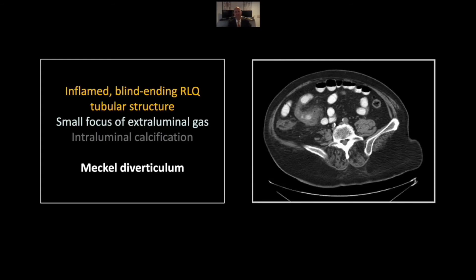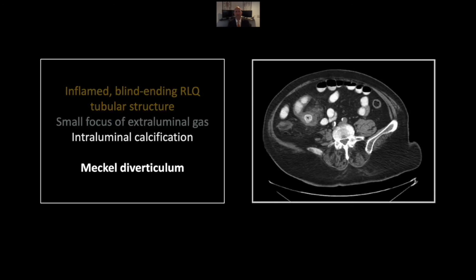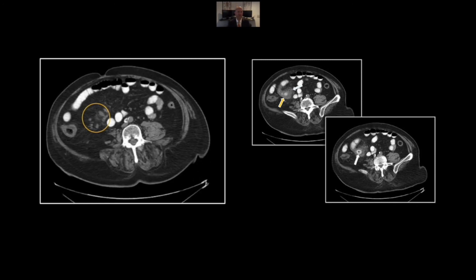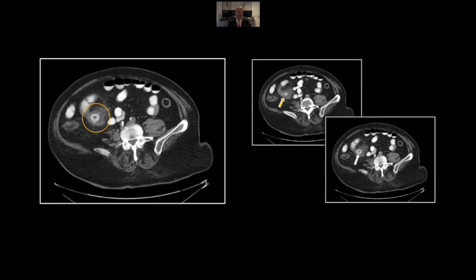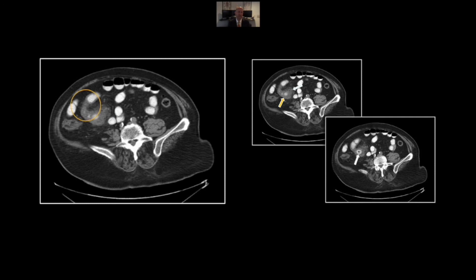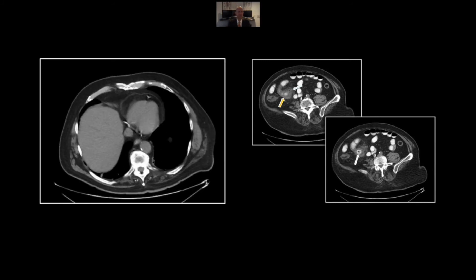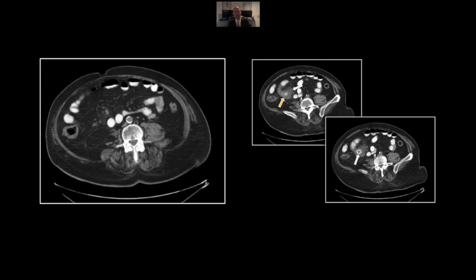Our next case is a Meckel diverticulum with perforation — this Meckel has it all. There is an inflamed blind-ending pouch here in the right lower quadrant, and there is a tiny focus of gas suggesting a perforation. Next cut down, you can really appreciate a calcified stone there within the diverticulum — that's a very common feature. Again, you can see the stranding and the gas consistent with a perforation. On the cine, note especially how the loop of terminal ileum runs past the base of this diverticulum in both directions — anteriorly and posteriorly.